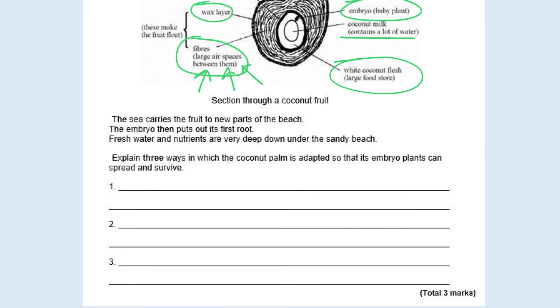We read the stem of the question. It says the sea carries the fruit to new parts of the beach, which is something I just worked out. It says the embryo then puts out its first root. Fresh water and nutrients are very deep down under the sandy beach. So it says explain three ways in which the coconut palm is adapted so that its embryo plants can spread and survive. Again I'd like you to pause and get a pen and piece of paper and write down some answers.